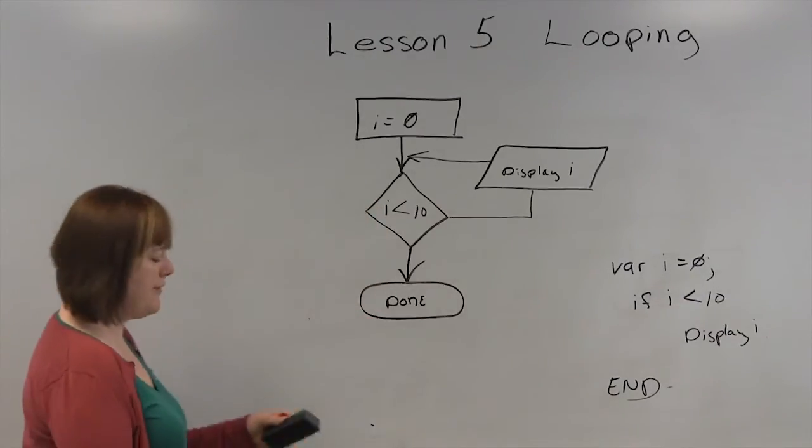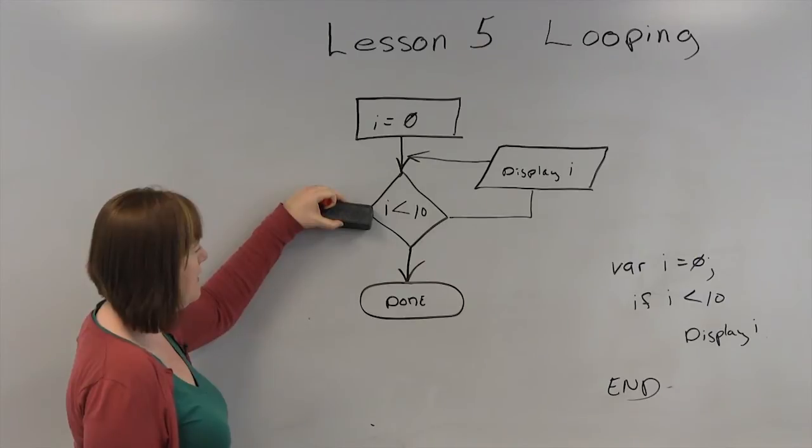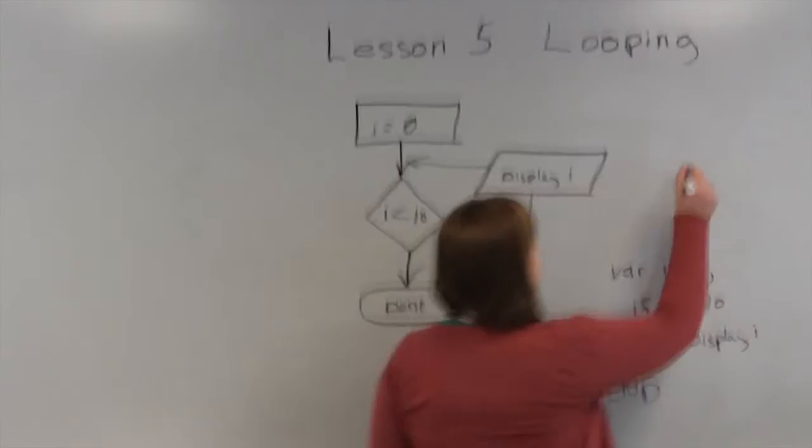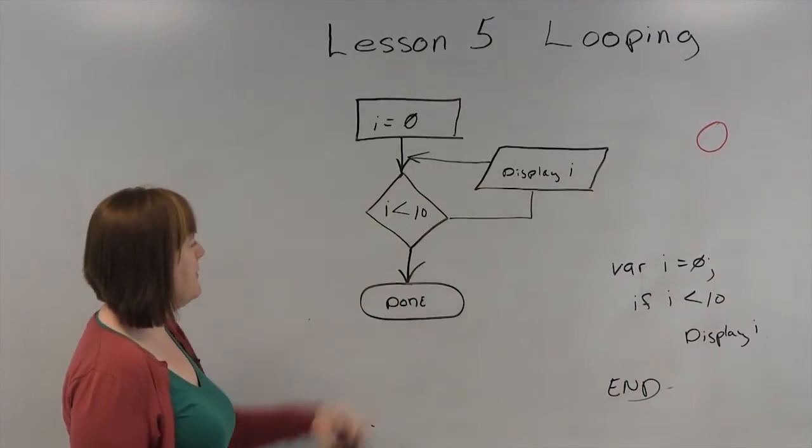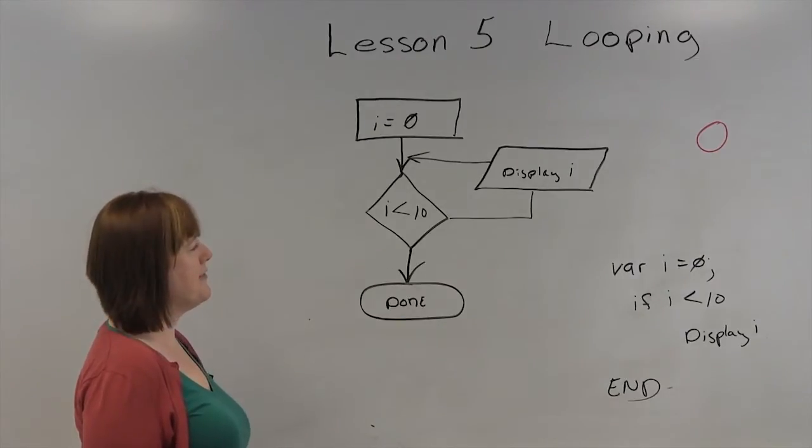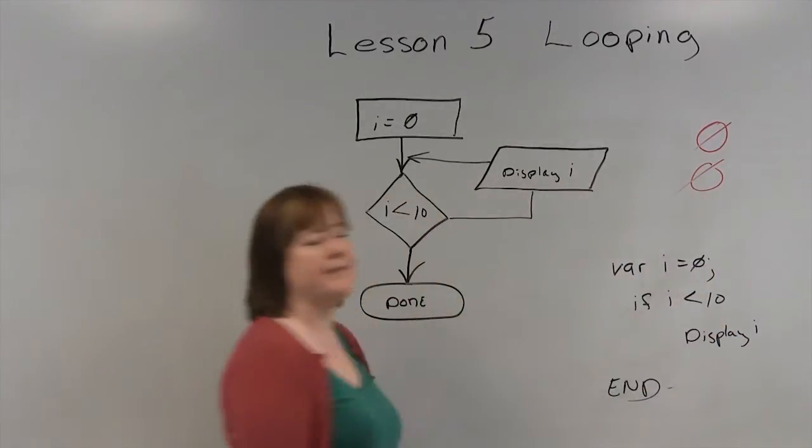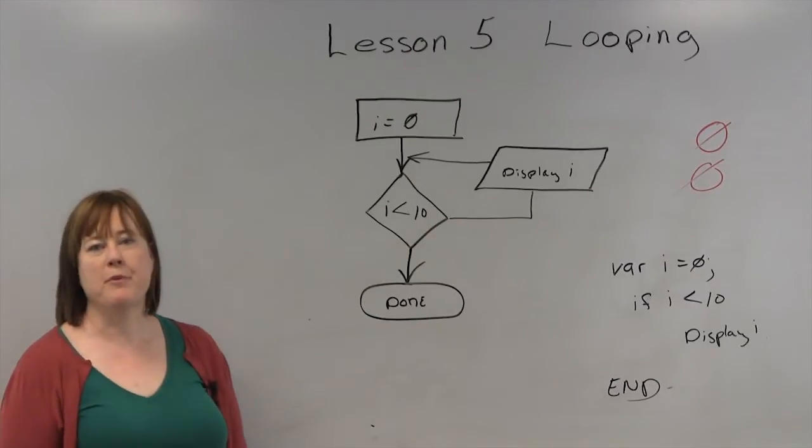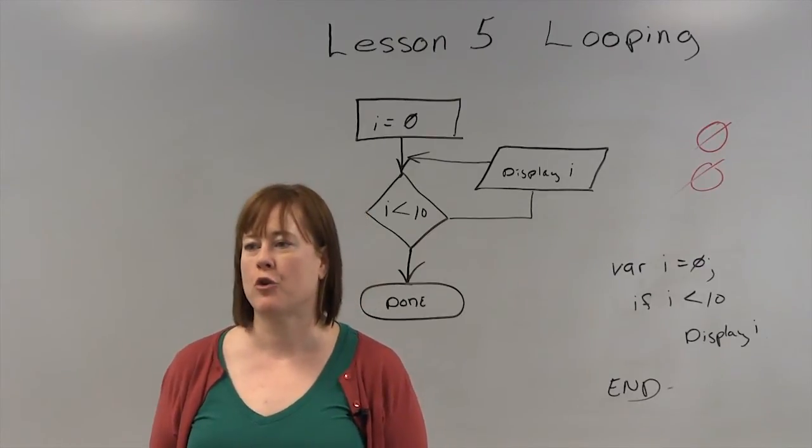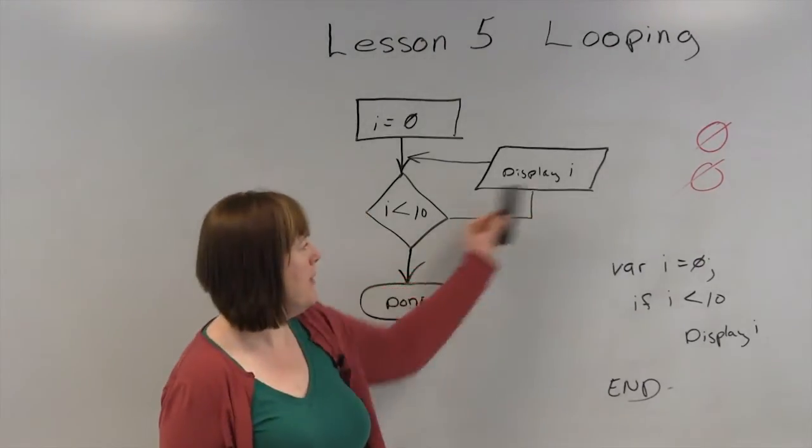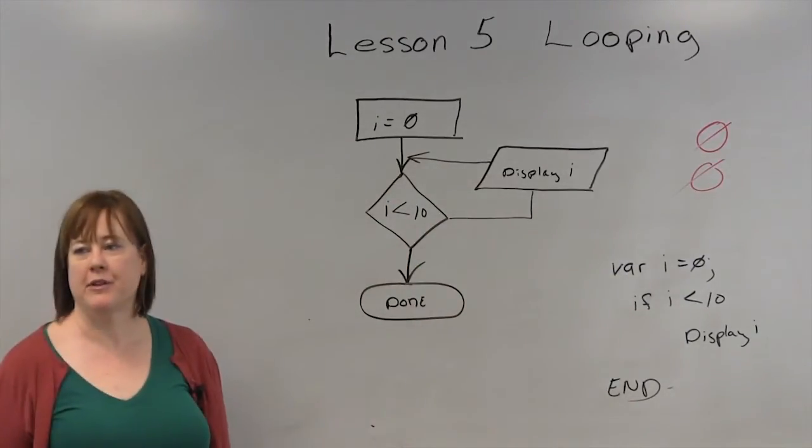Here's my pseudocode. Variable i equals 0. If i is less than 10, display i, end. Let's walk through what happens. The first time I go through, i is 0. I check to see, is i less than 10? I display i, 0. The second time I go through, is i less than 10? It's still 0. I'll display i. Wait a minute. This is a problem. Why is this a problem? This is one of the most common errors in looping. If you don't do something to change your control variable, you'll get an infinite loop.